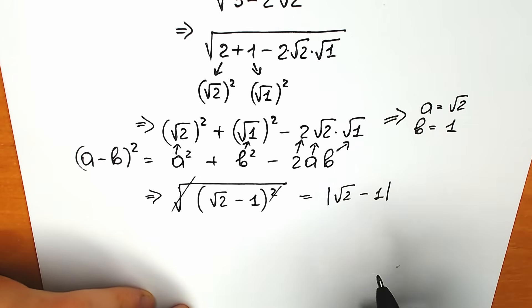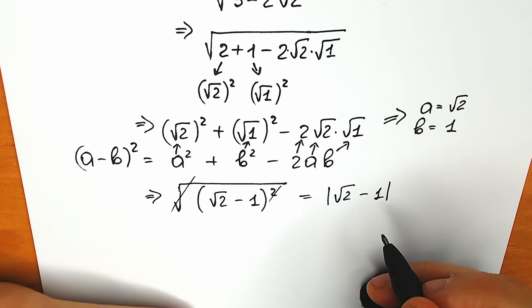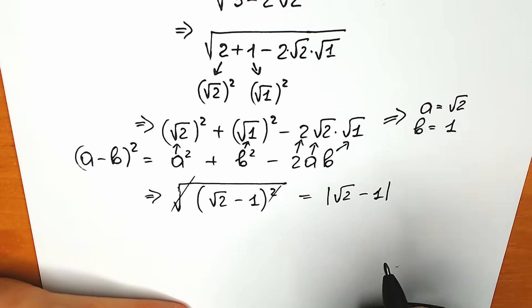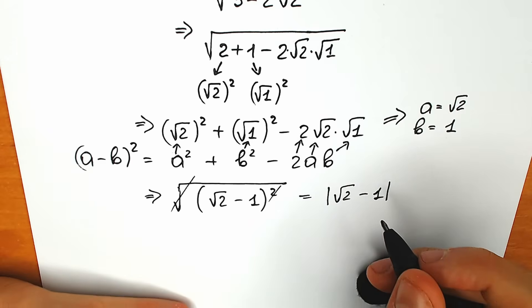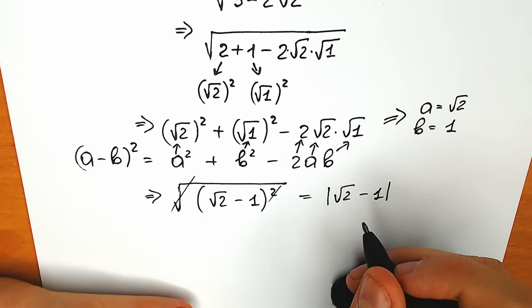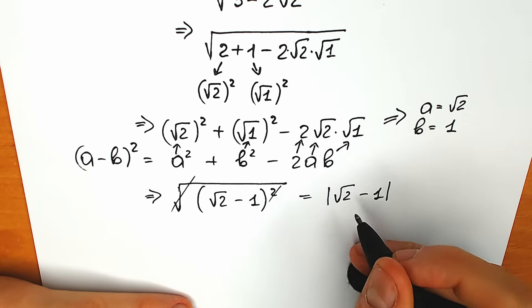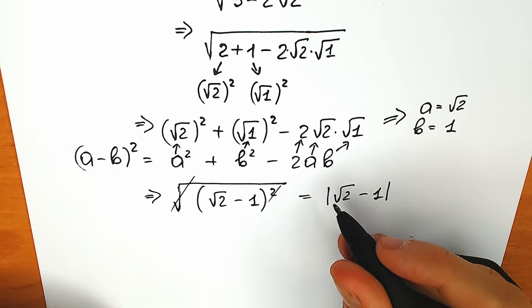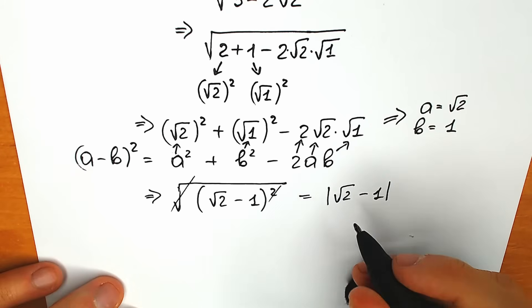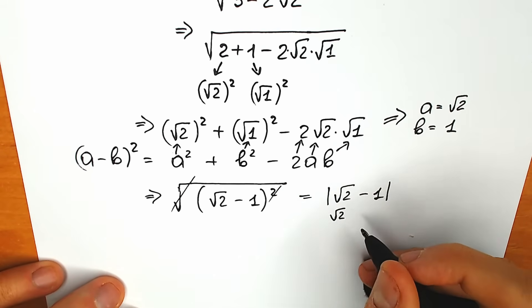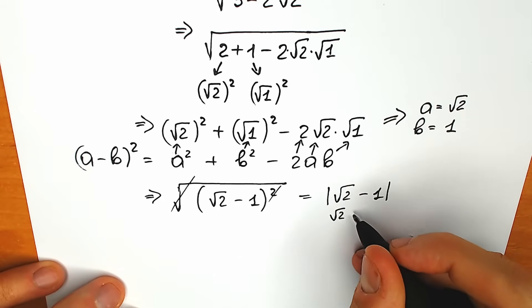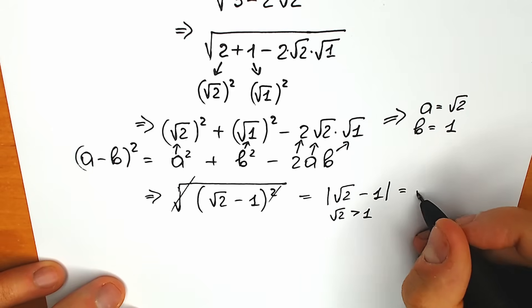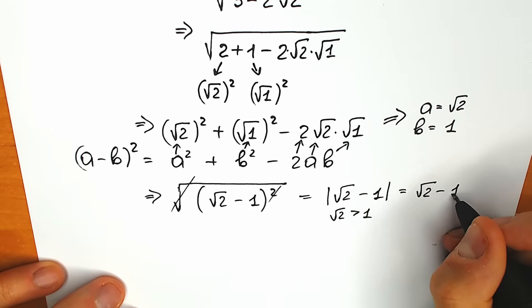Now let me say a few words about this absolute value, because a lot of students forget about it — but it is extremely important. Absolute value means: if the expression is positive, put a positive sign; if negative, put a negative sign before the parentheses. In our case, square root of 2 is greater than 1, so this absolute value is positive. Our answer is square root of 2 minus 1.